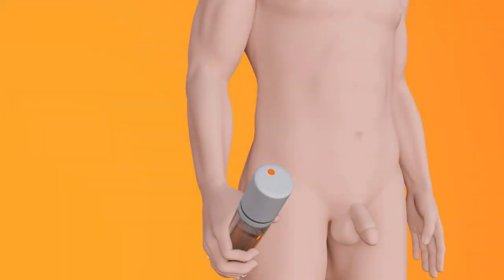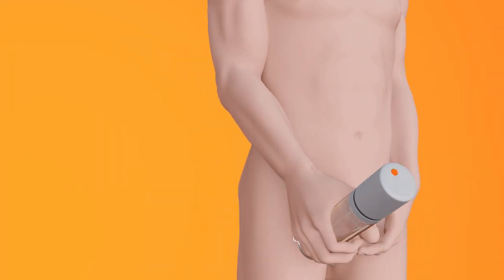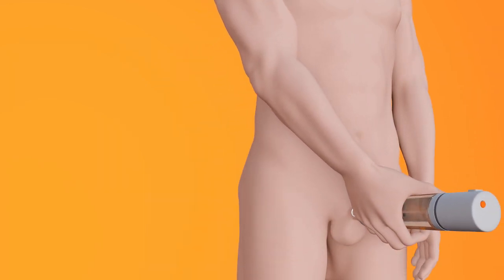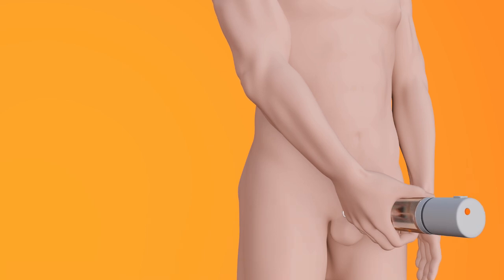Lubricate your penis and the pubic area. Insert your penis into the open end of the cylinder. Make sure to press the cylinder firmly against the body to ensure a good seal.